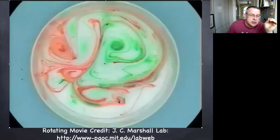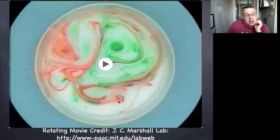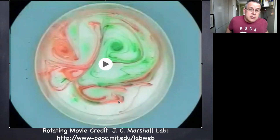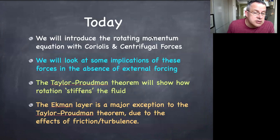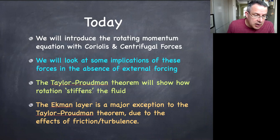To understand this, we have to set up the equations of motion relevant for a rotating tank, which are quite similar to the equations of motion for fluid on a rotating sphere. From those equations, in the second short video, we'll do a couple of applications. First we introduce the rotating momentum equations and look at some implications of these forces in the absence of external forcing — the Taylor-Proudman theorem, the Ekman layer, and inertial oscillations.